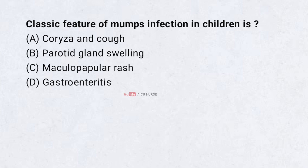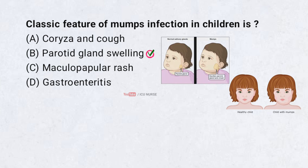The characteristic feature of mumps is: A. Rhinorrhea and cough. B. Parotid gland swelling. C. Maculopapular rash. D. Gastroenteritis. Correct answer: B. Parotid gland swelling.